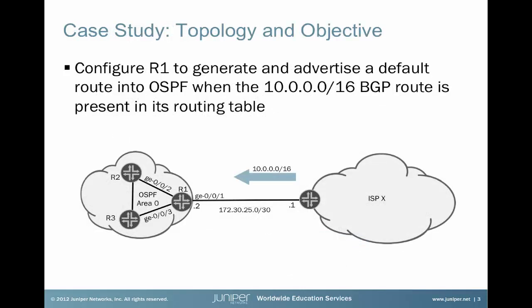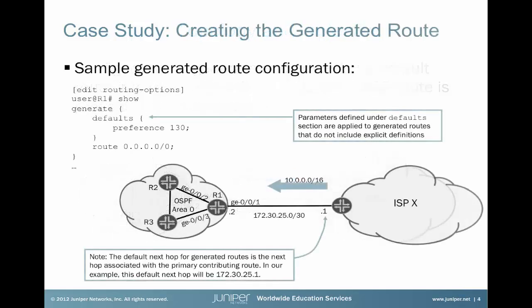We can see that we are sending the 10.0/16 route and we need to also generate this route and make sure that the devices R2 and R3 can see it in OSPF. So we'll start out with the configuration of the generated route. Like an aggregate or a static route, it's configured under routing options. You can apply parameters to the generated route, such as preference or routing policy.